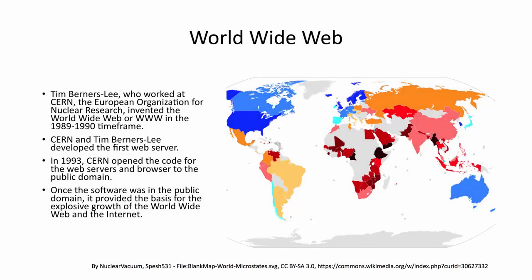The next area we'll talk about is the World Wide Web. Tim Berners-Lee, who worked at CERN — the European Organization for Nuclear Research — invented the World Wide Web, or WWW, in the 1989 to 1990 timeframe. CERN and Tim Berners-Lee also developed the first web server. In 1993, CERN opened the code for the web servers and browsers to the public community, which really fueled the growth of that technology. Once the software was in the public domain, it provided the basis for the explosive growth of the World Wide Web and the internet.